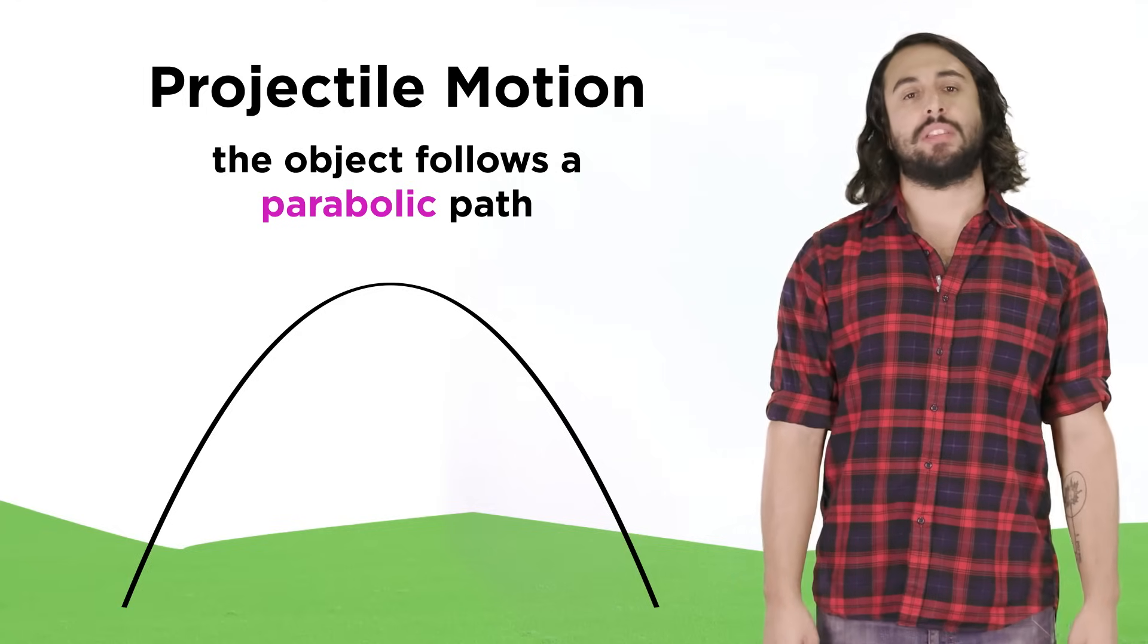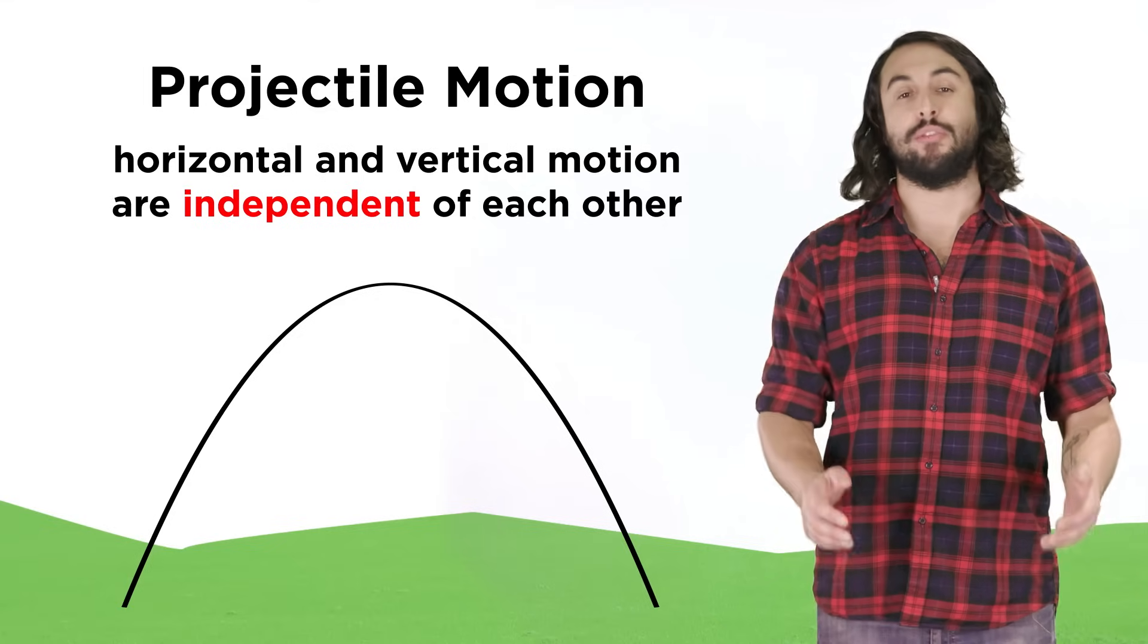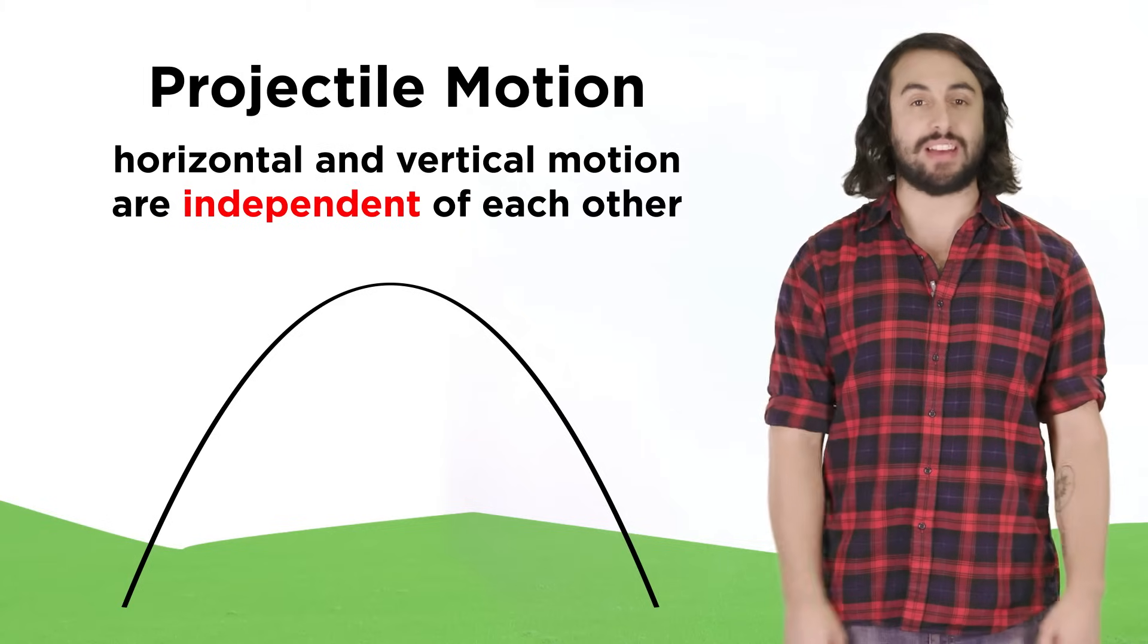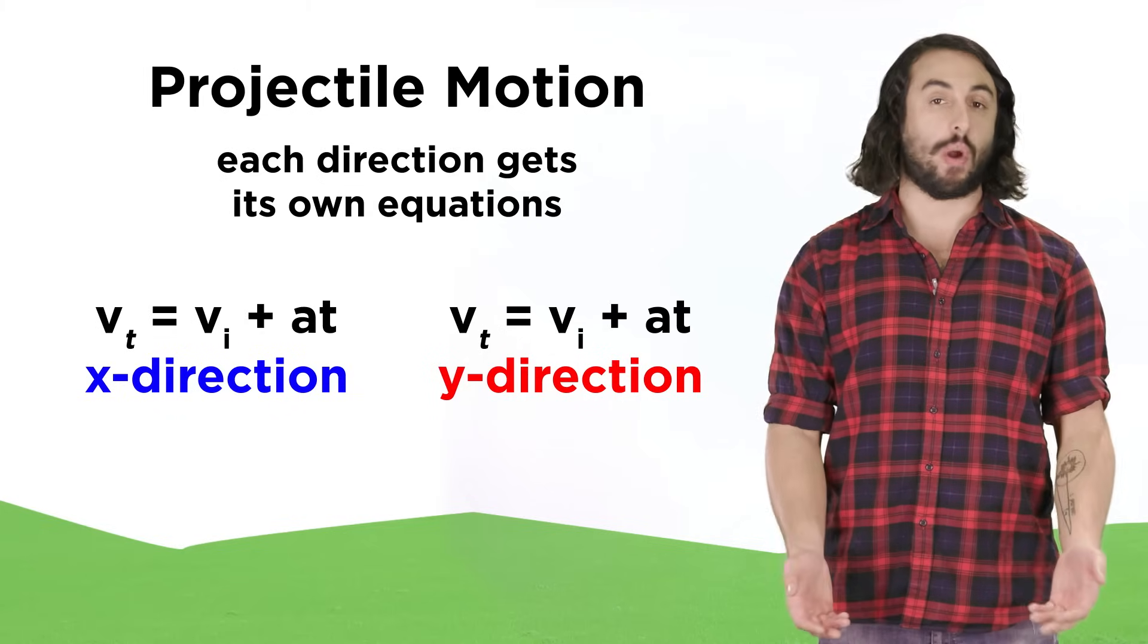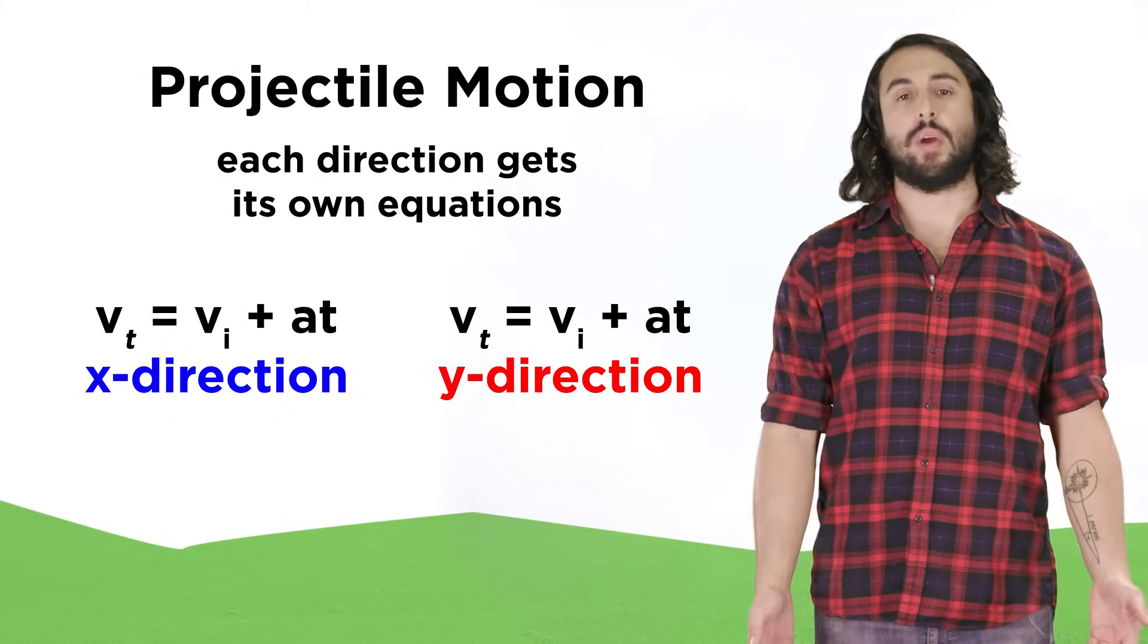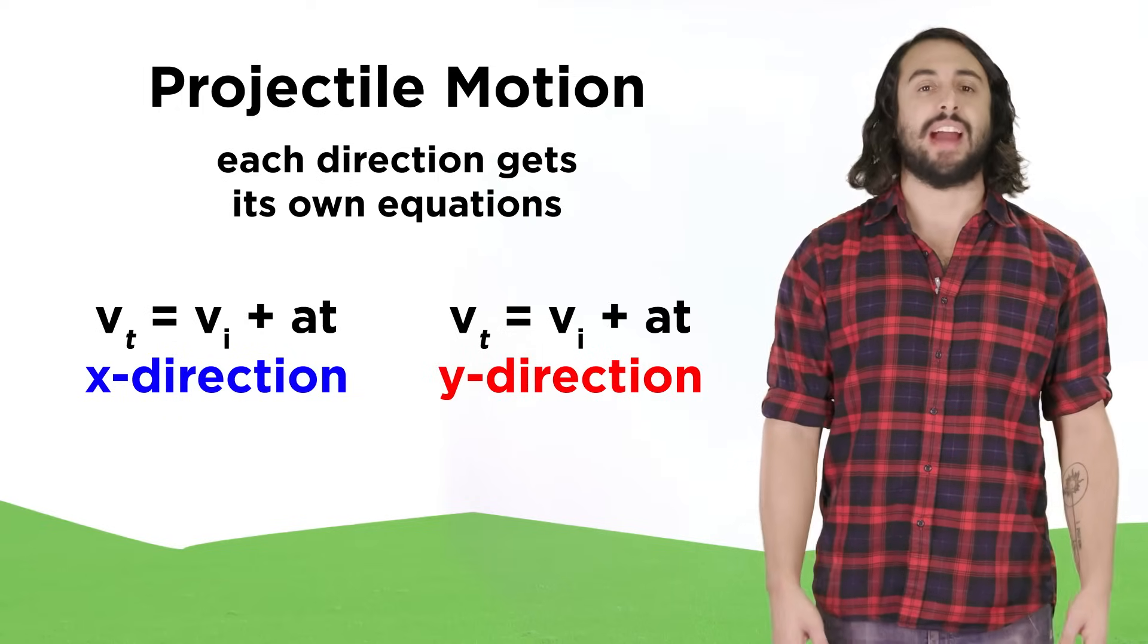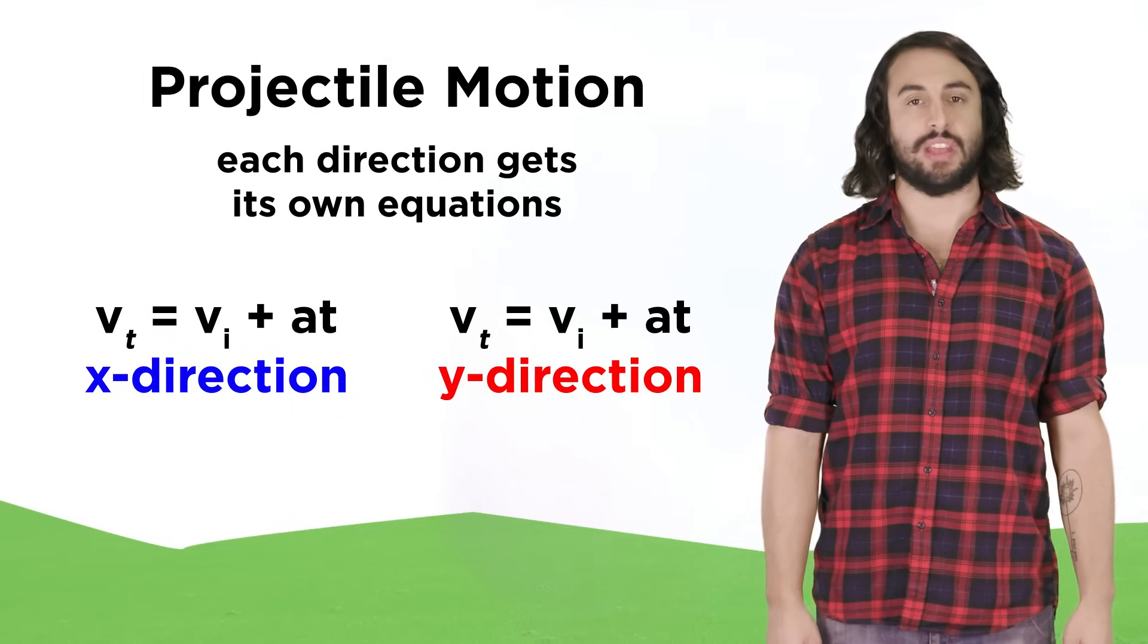The important thing to understand about these kinds of examples is that the horizontal motion and vertical motion of the cannonball are completely independent of one another. This means we can use separate equations to discuss the motion in each direction, one equation that exclusively corresponds to the x-coordinates of the object, and another that exclusively corresponds to the y-coordinates of the object.